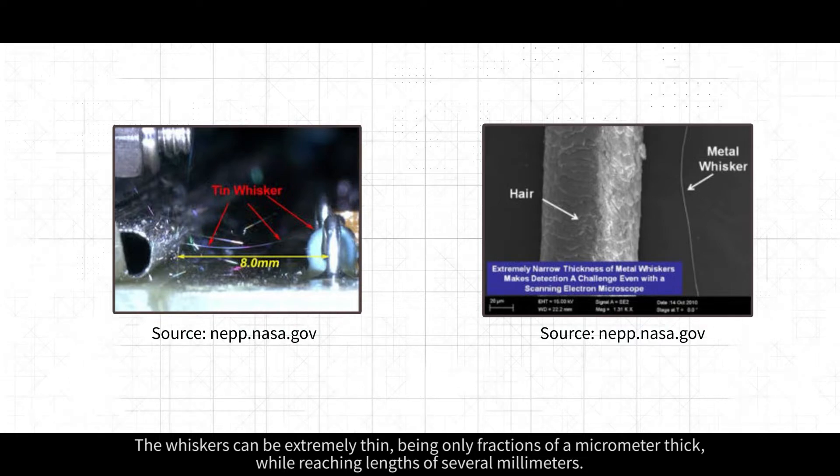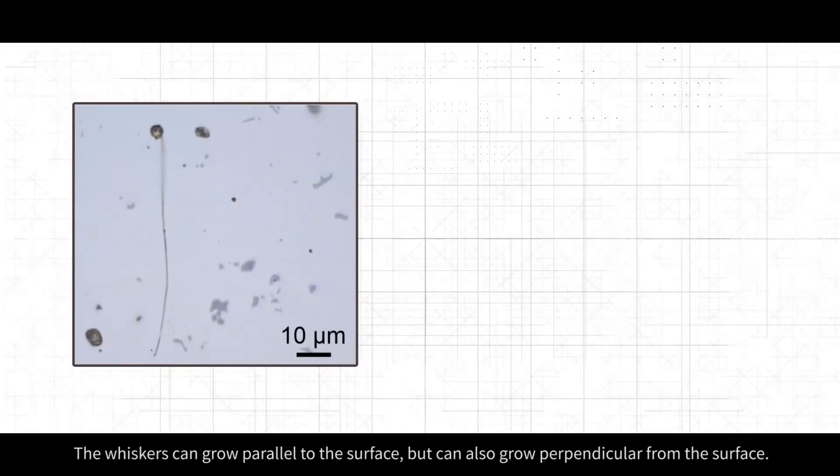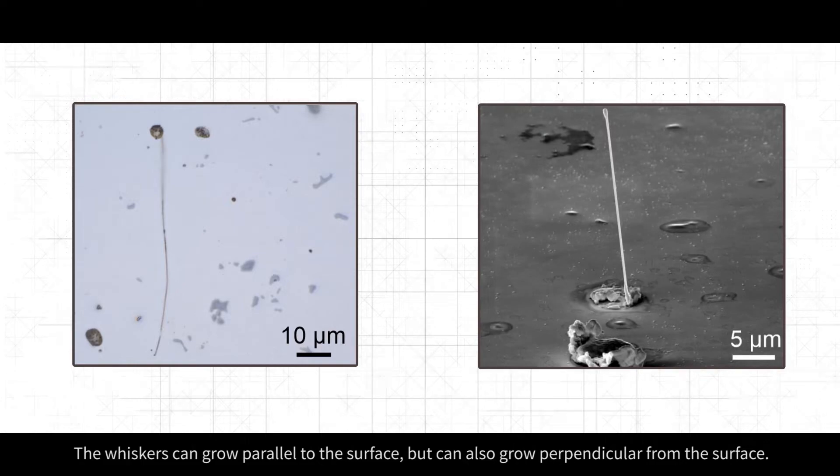While reaching lengths of several millimeters, the whiskers can grow parallel to the surface, but can also grow perpendicular from the surface.